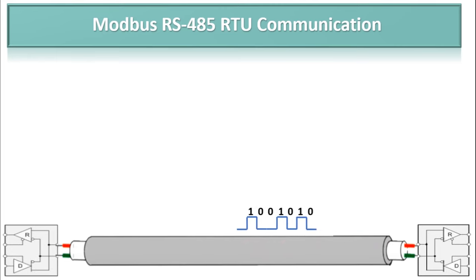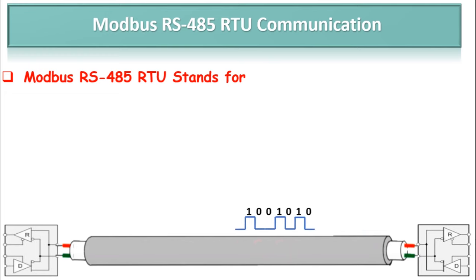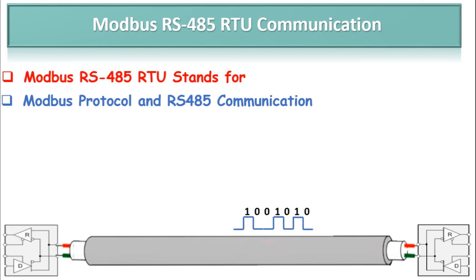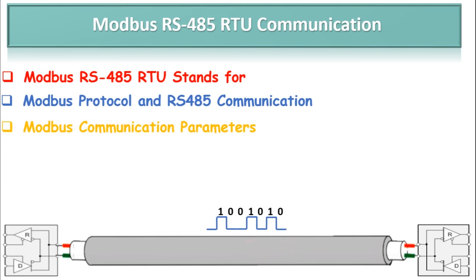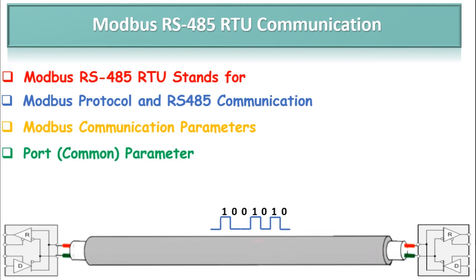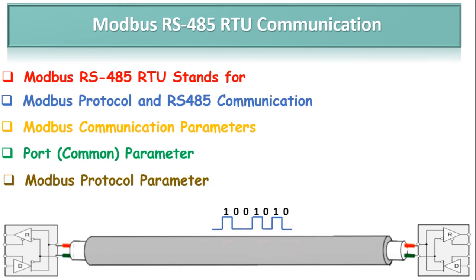The content of this video includes the following points. First, we will see what Modbus RS485 RTU stands for and its history. Then we will see the difference between Modbus protocol and RS485 communication in detail along with their features. Then the most important topic: the Modbus communication parameters, which includes RS485 port parameters and Modbus protocol parameters essential for viewing data values during communication.